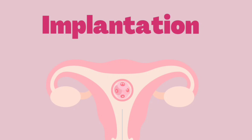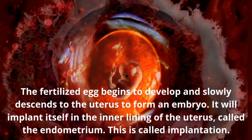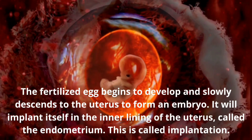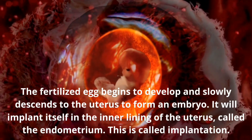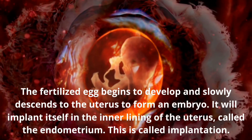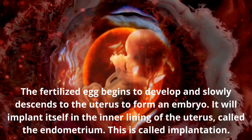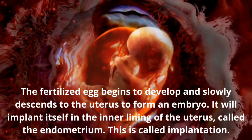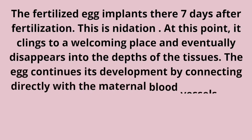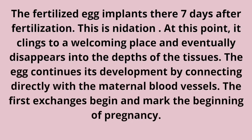Implantation: the fertilized egg begins to develop and slowly descends to the uterus to form an embryo. It will implant in the inner lining of the uterus, called the endometrium. Implantation takes place about 7 days after ovulation — this is called implantation. The fertilized egg implants there 7 days after fertilization, which is called nidation. It clings to a welcoming place and eventually disappears into the depths of the tissues. The egg continues its development by connecting directly with the maternal blood vessels, and the first exchanges begin, marking the beginning of pregnancy.